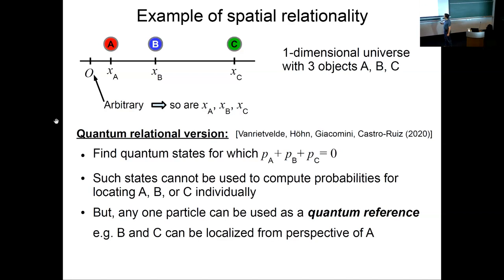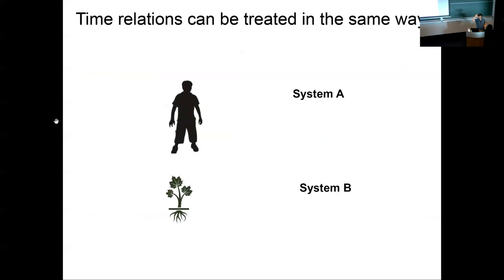And there is a quantum analog of that analyzed extensively by the group here. You can do the same thing in the quantum version of the system. You can impose the constraint and again, fun things happen. Basically when you solve the constraint, this constraint quantum system, you can no longer assign probabilities for where A, B, or C are individually, but only for relational data, only for where C or B are from the perspective of A, or where B is from the perspective of C. And so on and so forth.